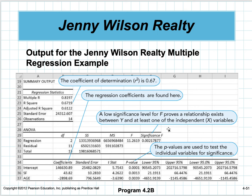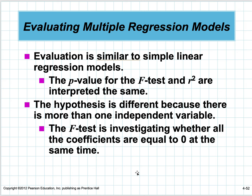We get an R-squared of 0.672—67.2% of the variation in selling price is based on square footage and age. The significance for F is 0.002, so even at a 1% significance level, this is a significant model. Looking at the p-values: the p-value for square footage is below 1%, and the p-value for age is below 1% as well, so both are significant.